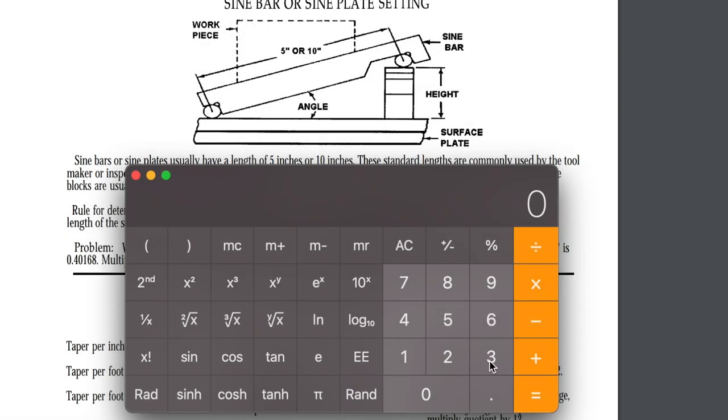In the case of a 60 degree live center we'll set the sine plate to 30 degrees. So sine of 30 is 0.5 multiplied times 5 would give us 2 and a half inches. This will give us a 30 degree angle on our sine plate.